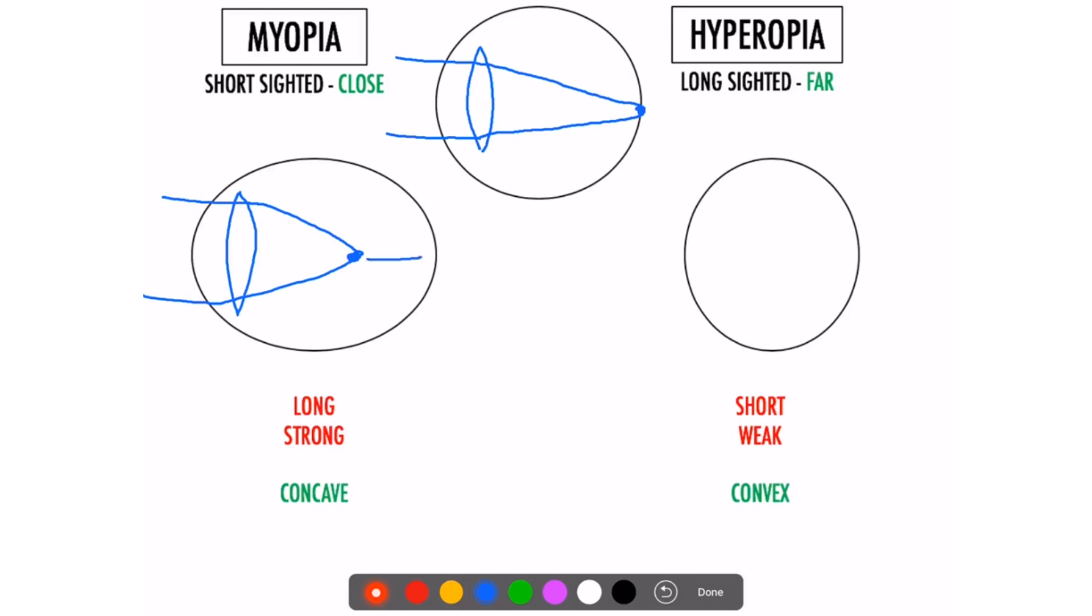Whereas in long-sightedness, the lens is very thin or the eyeball is very short, and as a result it focuses back to very far away. So how do we fix that?